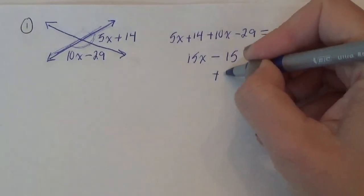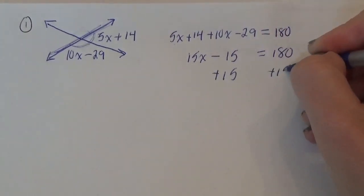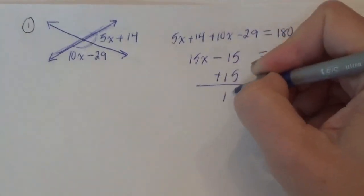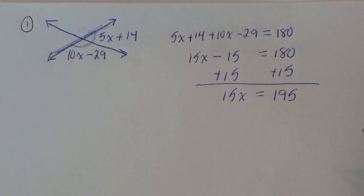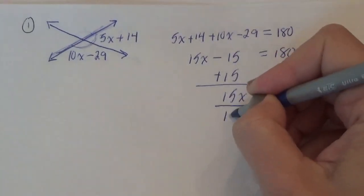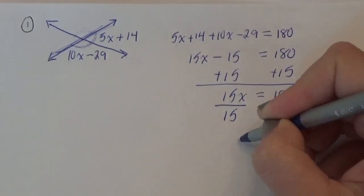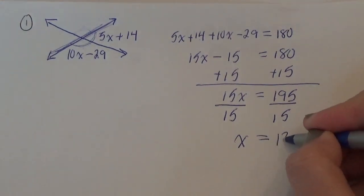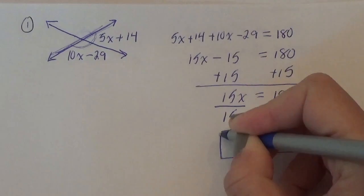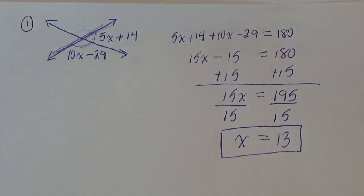So now to get rid of that, we're going to add 15. And we're up to 195. And then we're going to divide by 15. And that is going to bring us to... Let's use our calculator over here. 195 divided by 15. It comes out to be 13. So again, that is, I think, the trickiest kind.